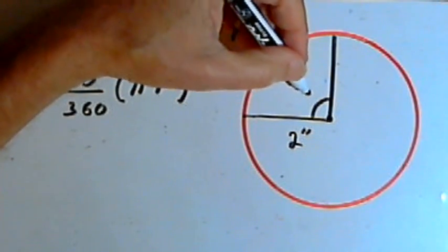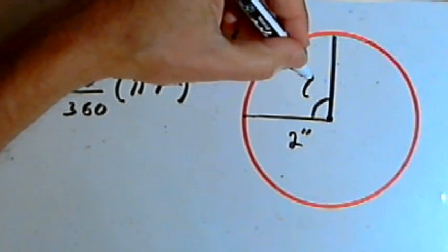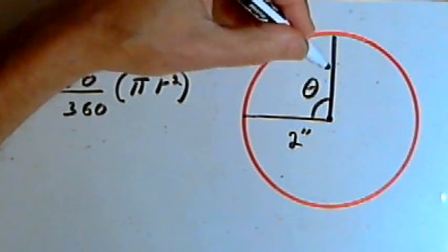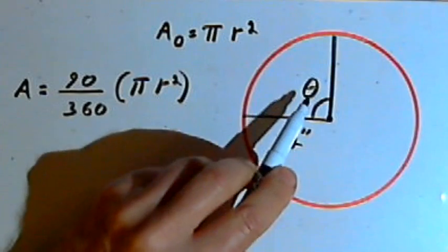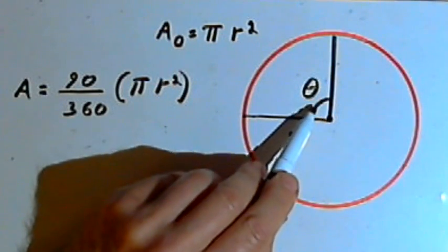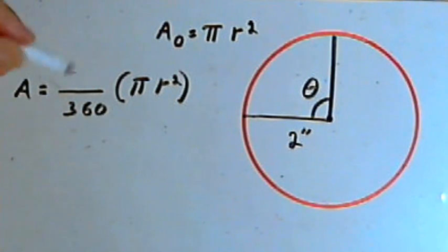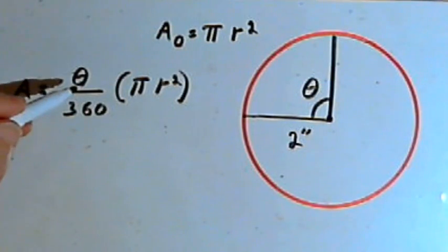And a lot of times when we deal with geometry or trigonometry, we use Greek letters to designate an angle. And I'm going to use the Greek letter theta. So theta stands for the size of that central angle. It stands for the central angle, which means instead of saying 90 over 360, all I have to do is say theta over 360.